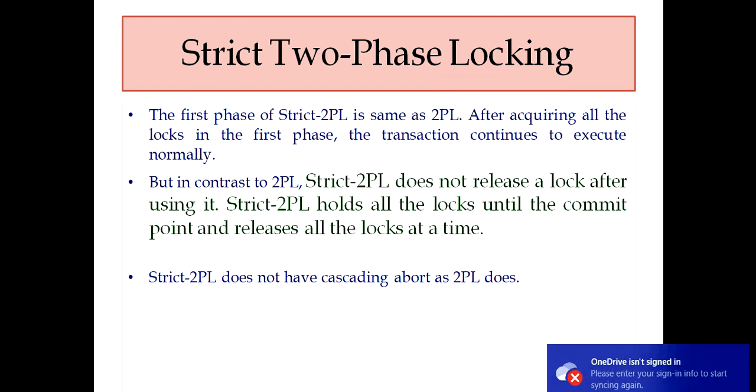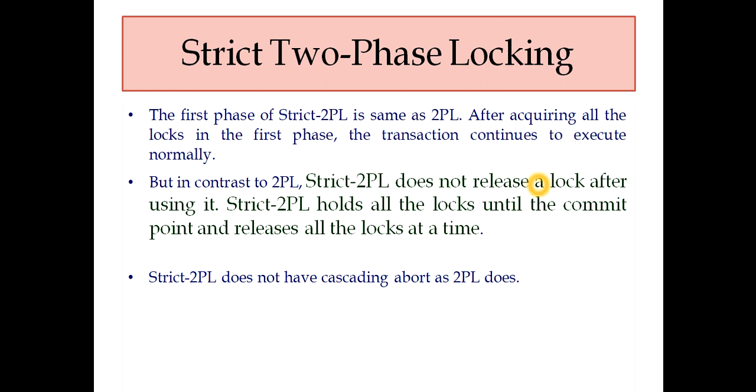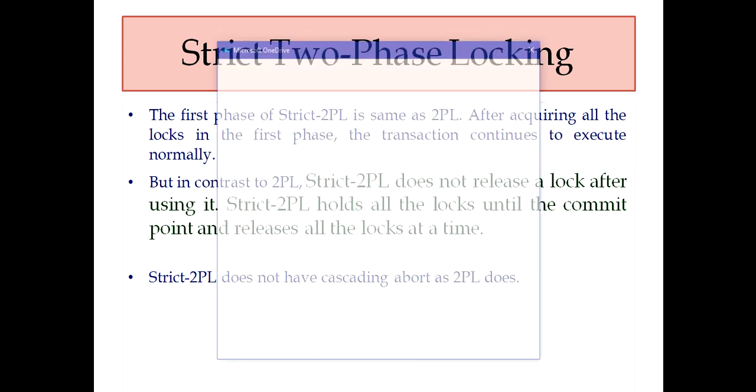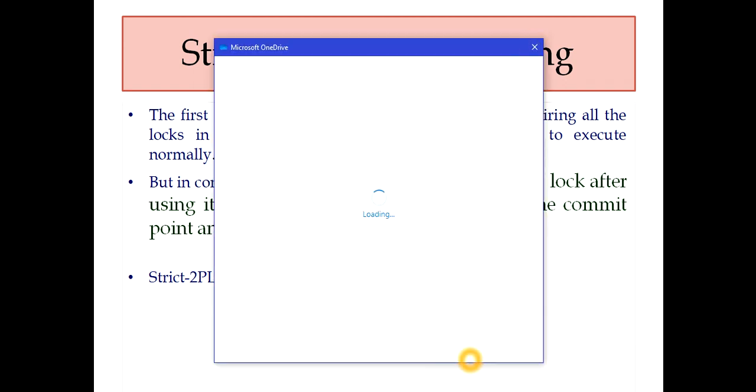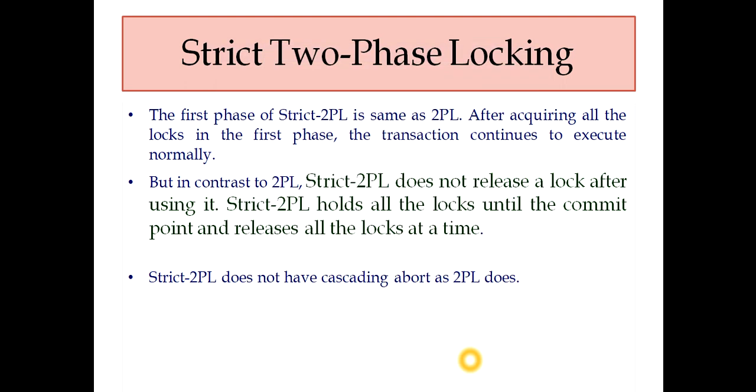But in contrast to 2PL, strict 2PL does not release a lock after using it. Strict 2PL holds all the locks until the commit point and releases all the locks at a time.